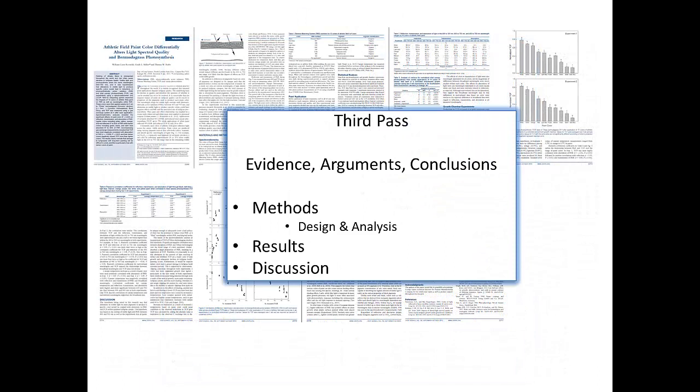The third and final pass is where you train a critical eye on the paper. This is the time for reflection and analysis. Here you focus on the evidence, arguments, and conclusions. You will spend some time in reading the methods, especially the design and analysis of the experiment. As you get more comfortable with reading research studies, you should be able to look at the evidence, the information contained in the tables and figures, and draw your own conclusions, and see if your conclusions concur with those of the authors.